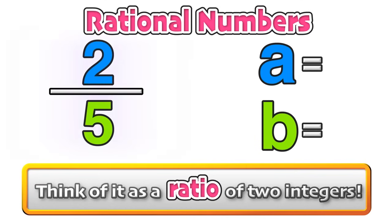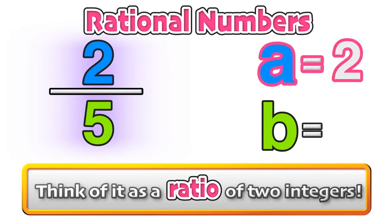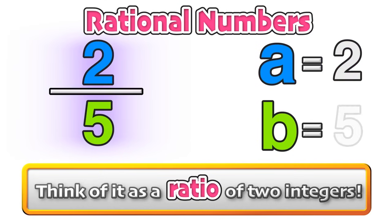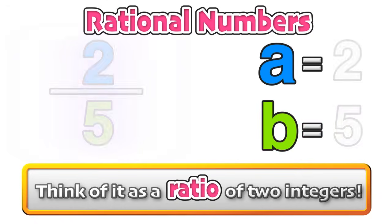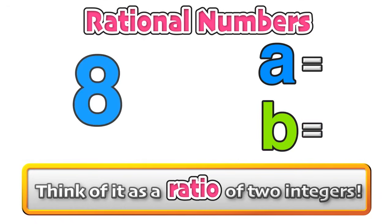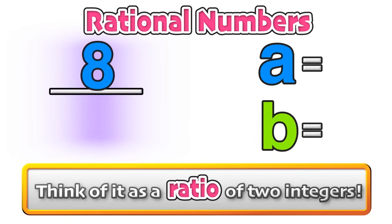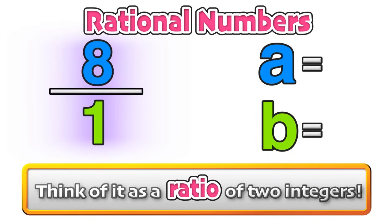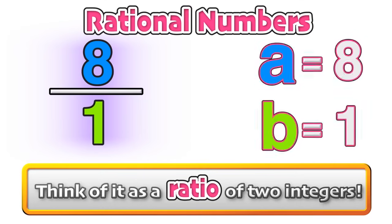Consider the example 2 over 5. This is a rational number because the first integer a is 2 and the second integer b is 5. What about a whole number like 8? We know that we can rewrite 8 as 8 over 1, so 8 is again a rational number where a is equal to 8 and b is equal to 1, the ratio of two integers.